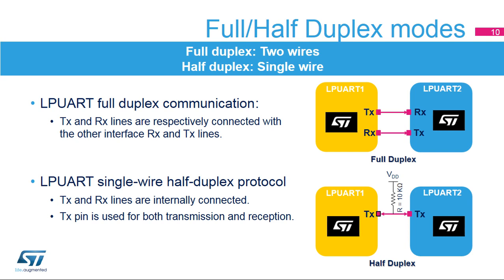In this communication mode, only the TX pin is used for both transmission and reception. The TX pin is always released when no data is transmitted, so it acts as a standard I/O in idle or reception states. For this usage, the I/O must be configured with the TX pin in alternate function open drain mode with an external pull-up resistor.